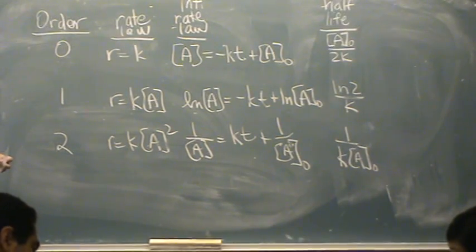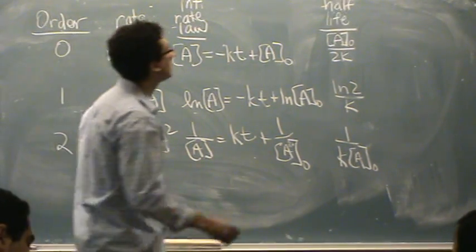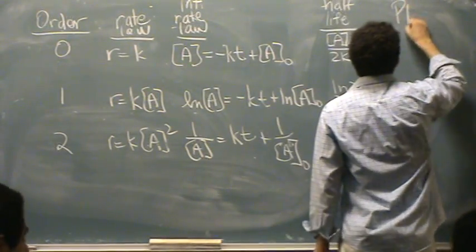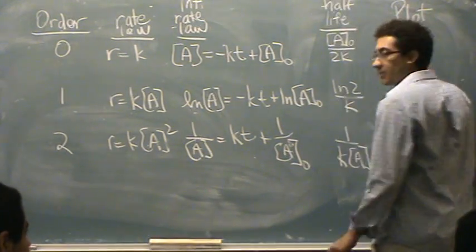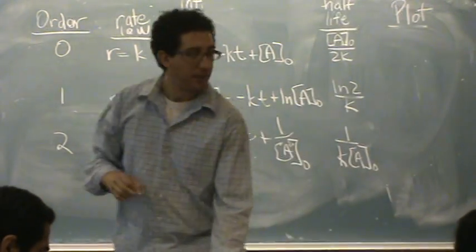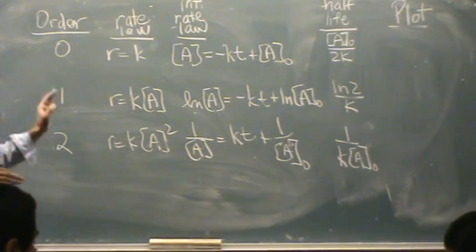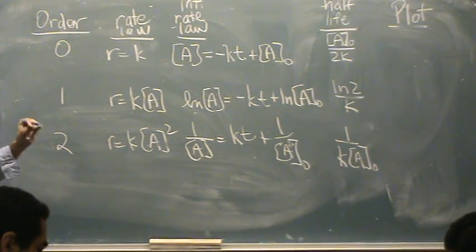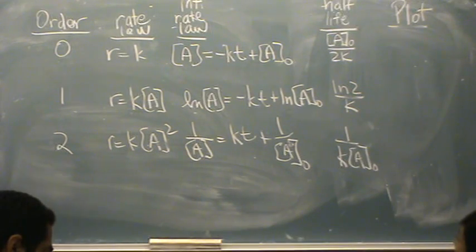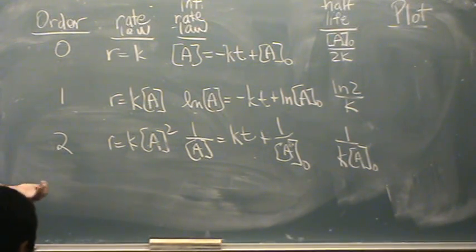And then there was one more category, the plot. And I'll show you how to use this after I write this down. Here, in each of these cases, a very specific plot will get you a line. The reason we care about the line is we can analyze it using algebra. We can figure out the slope and the y-intercept.